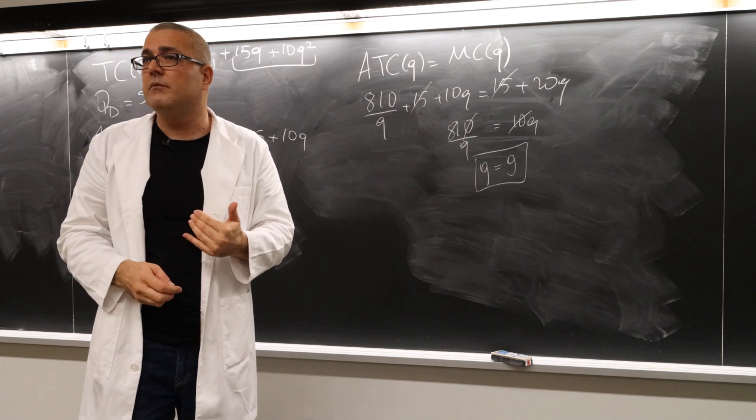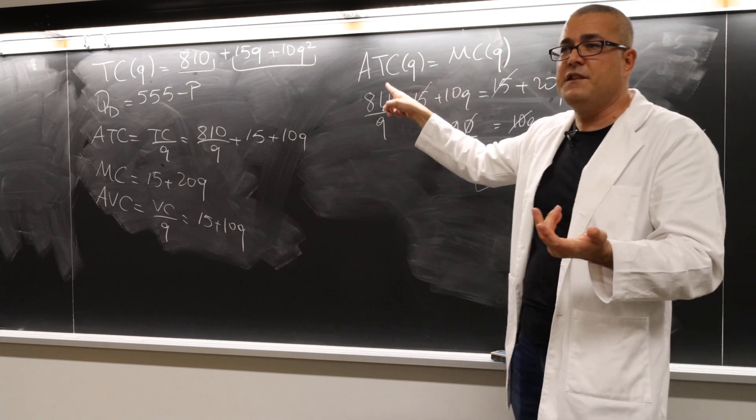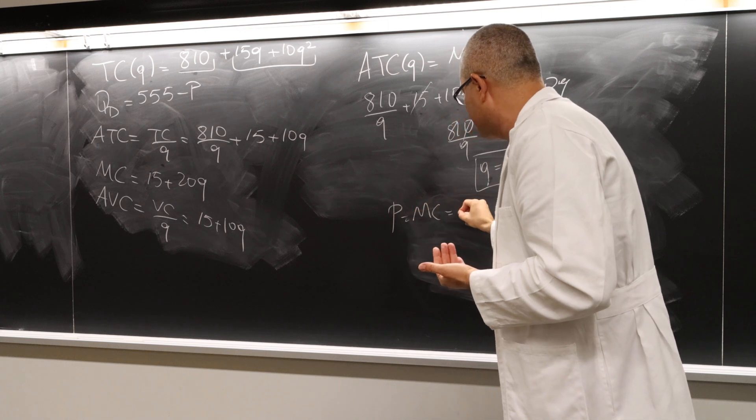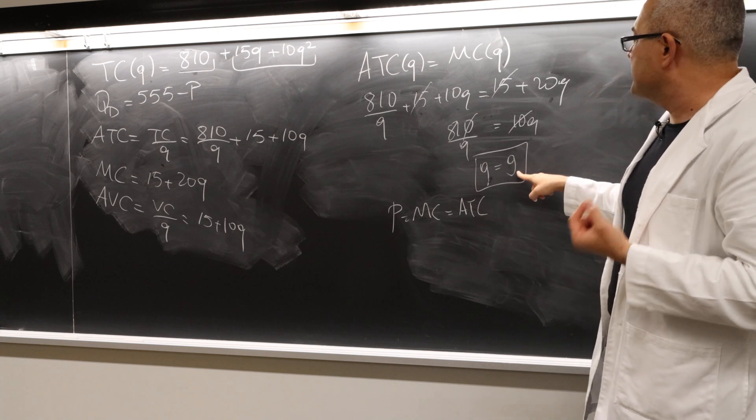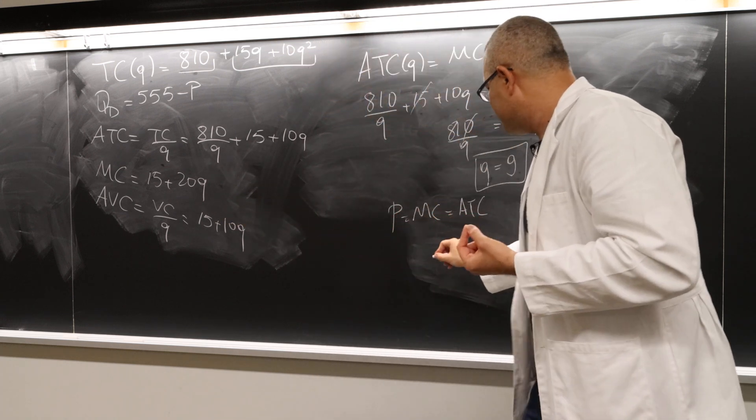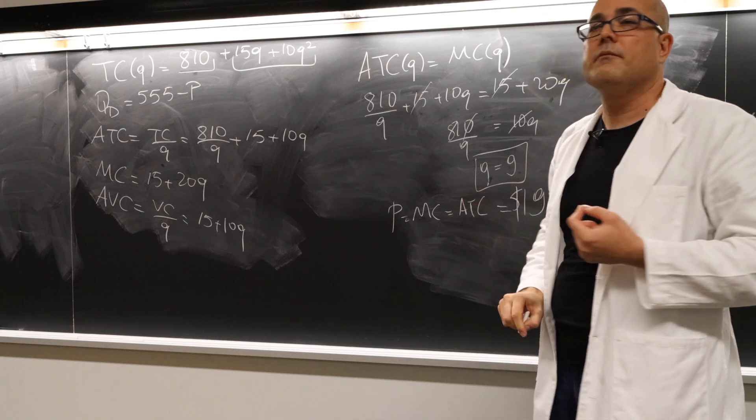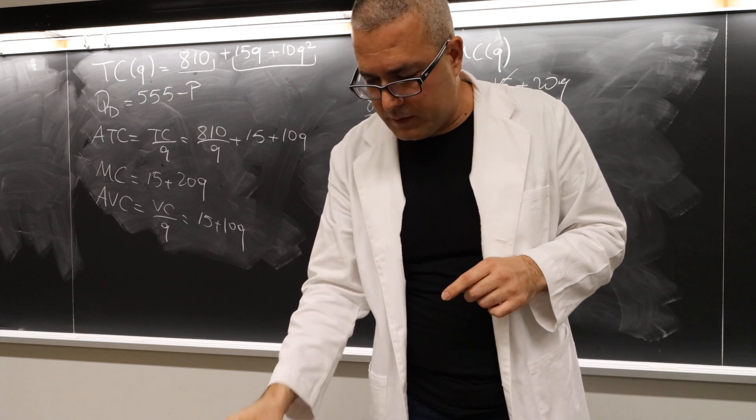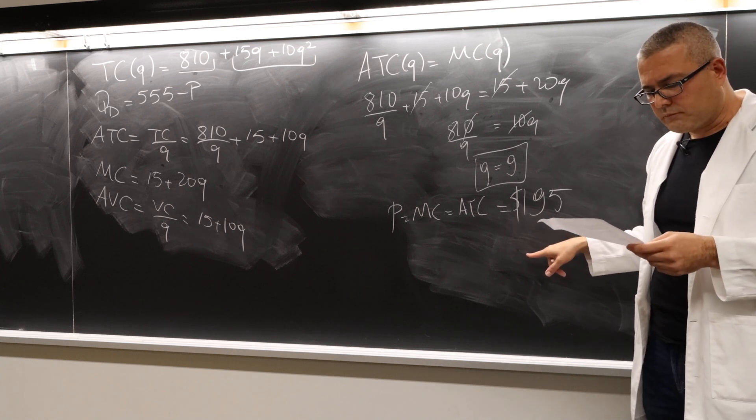Well, what's going to be the market price though? I can find that. Just plug this back to marginal cost curve or the ATC curve, doesn't matter. You're going to get the price because price is going to be equal to marginal cost, which is equal to ATC, right? So when q is nine, just plug it back to marginal cost. This is 180. So the price is going to be $195. By the way, this is a hot dog stand in Boston. Okay, so dollars. Clear? Any question, guys?